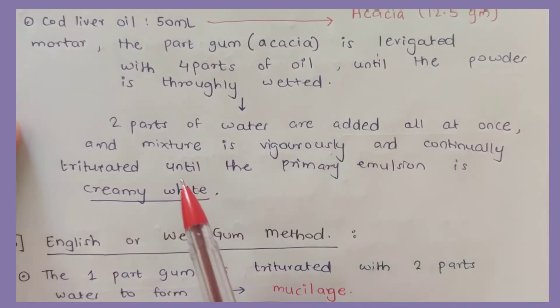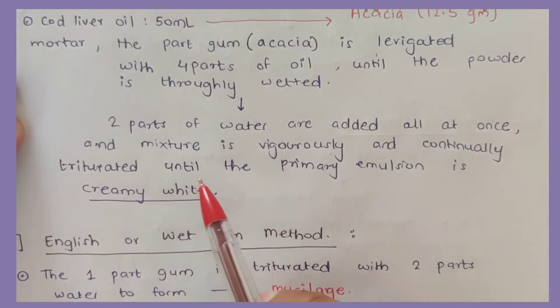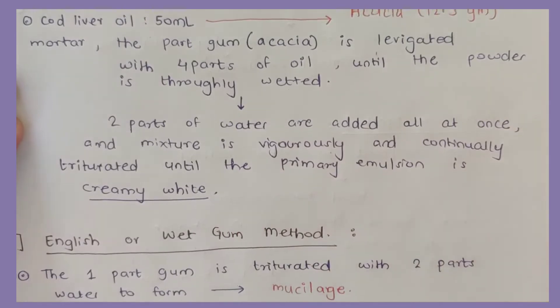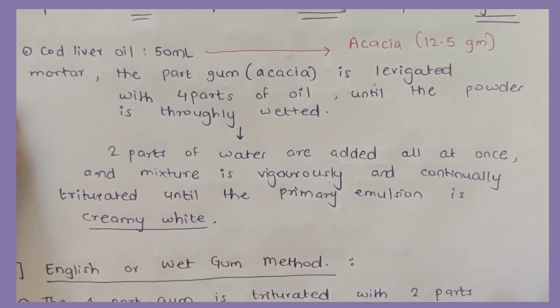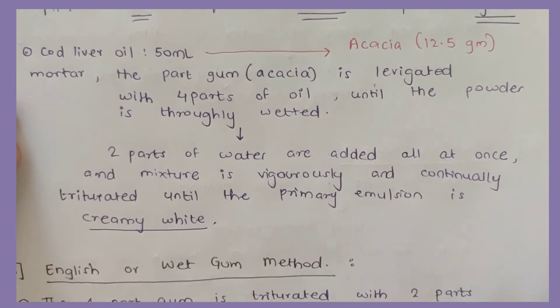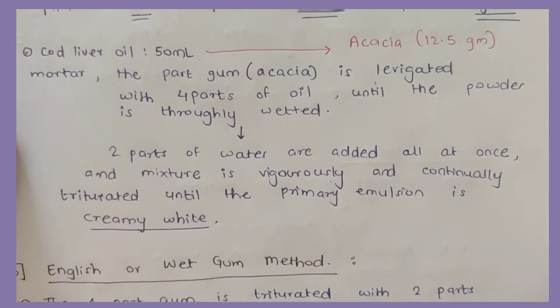Then two parts of water are added all at once, and the mixture is vigorously and continuously triturated until the primary emulsion is formed. At first, we have taken four parts of oil, one part of acacia, mixed and wetted it, and all at once added two parts of water.